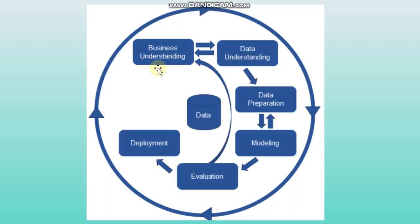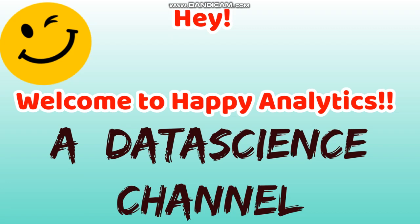Now looking back at the actual diagram, you should have an understanding of Business Understanding, Data Understanding, Data Preparation, Modeling, Evaluation, and Deployment. If you notice, from Evaluation it goes back to Business Understanding — meaning we may require multiple iterations. You evaluate, go back to Business Understanding, set the objective again, and go through the process one more time. That's all we have in CRISP-DM. If you have any further queries, put them in the comment box. Bye for now.